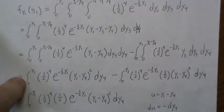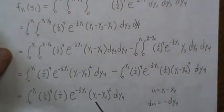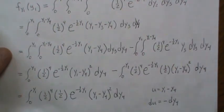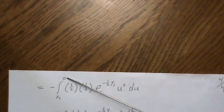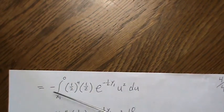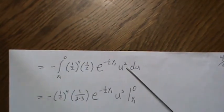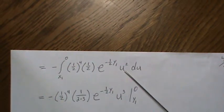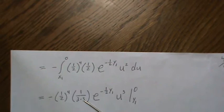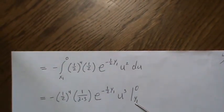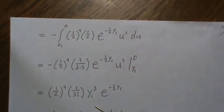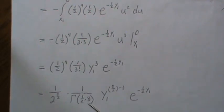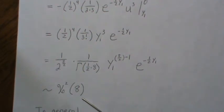Now we integrate with respect to y4, which appears in the exponent, so we do a u-substitution where u equals this piece and du equals minus dy4. Plugging in the limits of integration, they get reversed. The anti-derivative is one-third u cubed — that's where the third and the cube come from. Plugging in zero gives zero, and the two negatives cancel, leaving this distribution. We manipulate this to reveal a chi-squared with eight degrees of freedom.